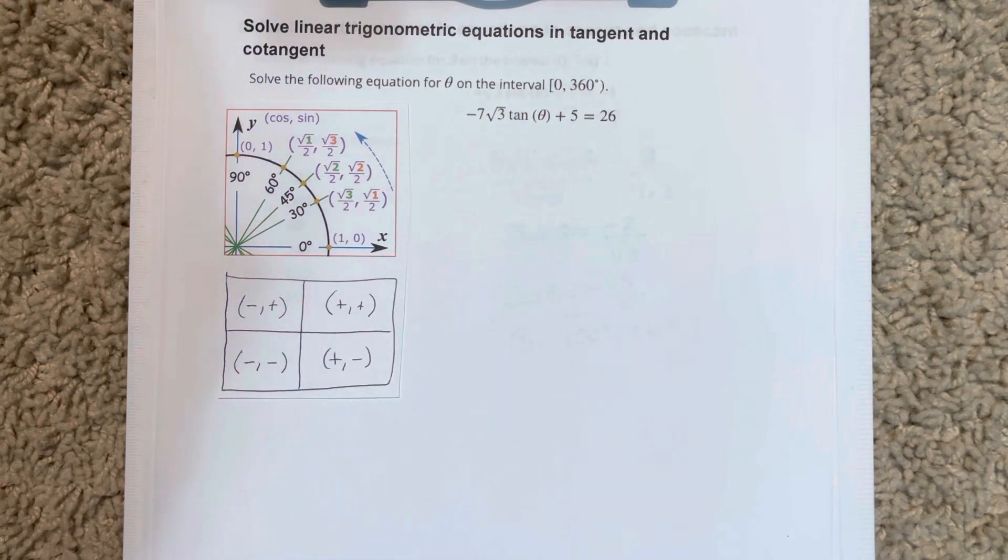In this video we're going to solve linear trigonometric equations in tangent and cotangent. We'll solve the following equation for theta on the interval 0 to 360 degrees. This interval represents one revolution around the unit circle in degree mode.